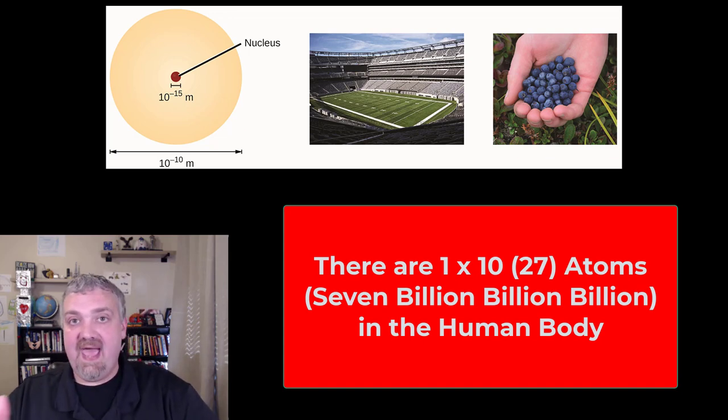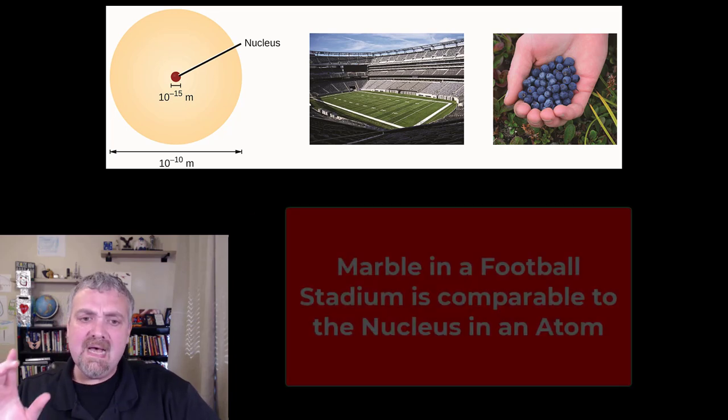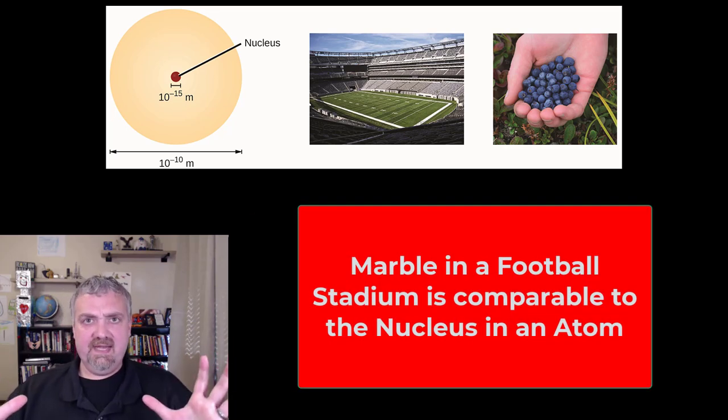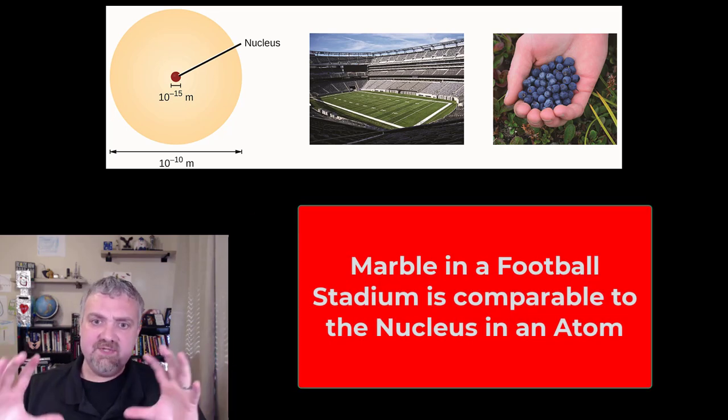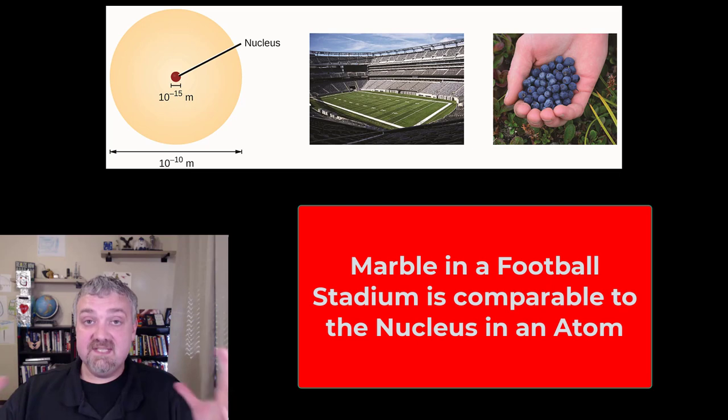So that shows how many atoms there are in things. How do we cram so many atoms into such a small space? It's because they're super tiny, like I said before. Look at the picture up here. If you took that football stadium and the entire football stadium was a single atom, the nucleus would be a marble sitting on the 50-yard line. So that just says most of the space in an atom is actually in the electron cloud. The nucleus itself is super tiny.